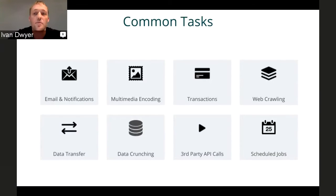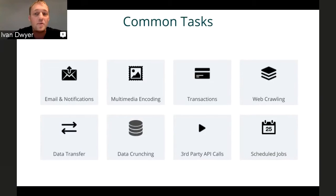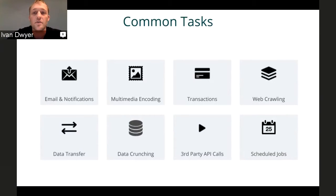Transaction processing is another major use case. A great example: when you buy something on Amazon, they give you the confirmation right away, but behind the scenes they might kick off a variety of jobs — processing the credit card, writing to a database, adjusting inventory. All of those things are happening asynchronously, and they don't make you wait for all that before giving you the next step. Crawling the web is a good example of a scheduled job. Shopping sites might daily crawl comparison sites, pull out the latest data — those kinds of things happen behind the scenes and fit this asynchronous model.